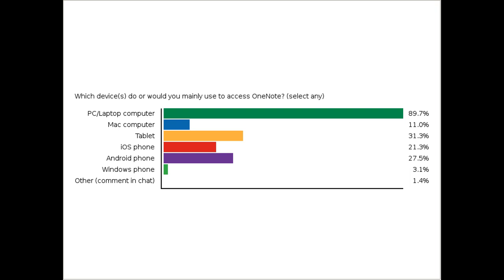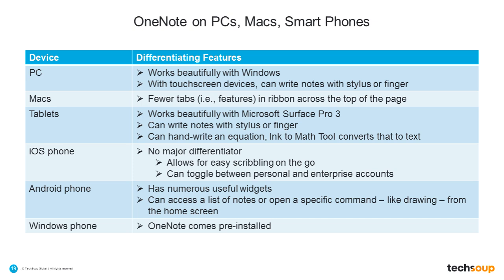Here are high-level features that differentiate among the devices. It works beautifully with Windows on the PC. If you have touchscreen devices, you can write notes with your stylus or finger. On Macs and Chromebooks, it's definitely going to have fewer tabs and fewer features, but at least you do have OneNote on the Macs now — it wasn't available in the past and it's getting more and more robust. For those Mac users on our call today, it is not as robust for Apple products.